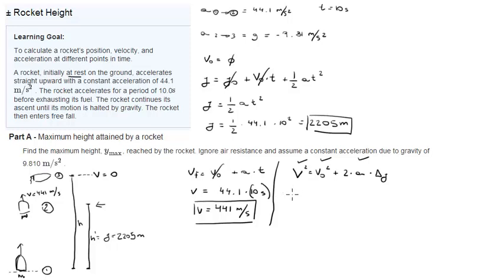So, 0 equals 441 squared plus 2 times negative 9.81 times Δy. When you solve for Δy, you get Δy equals 9,912.4 meters. This is the height from point 2 to point 3. As you can see, 9,912.4 meters is not proportional in the drawing.